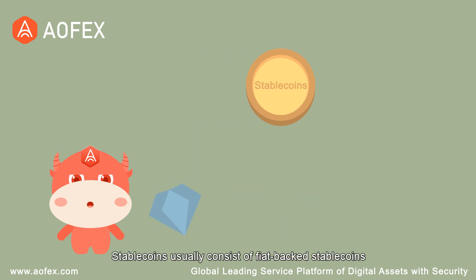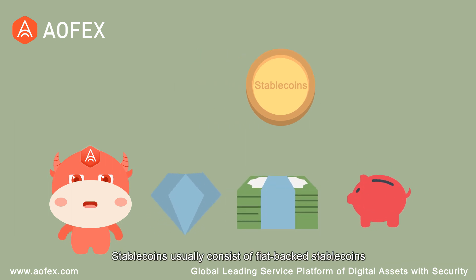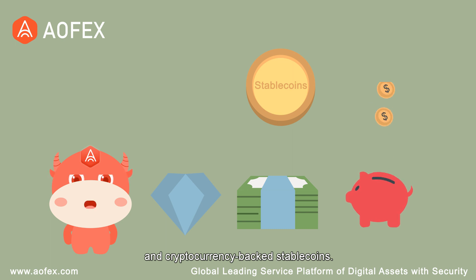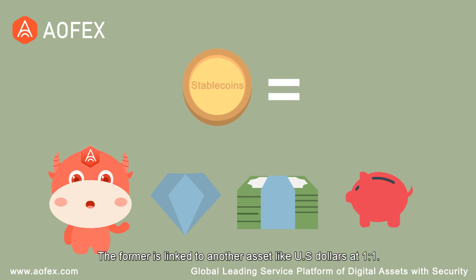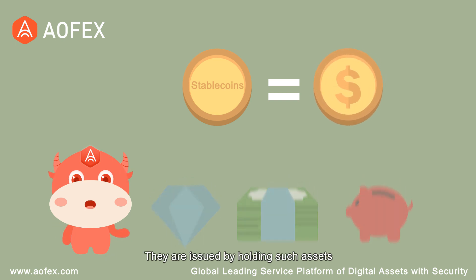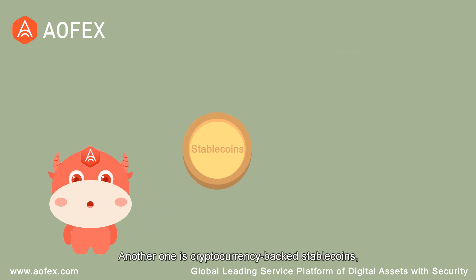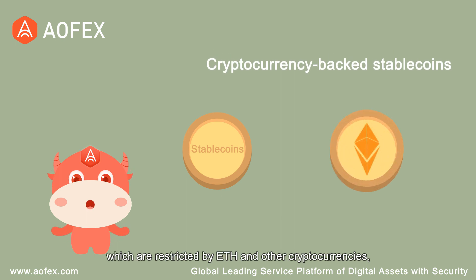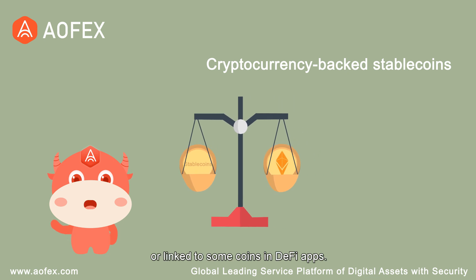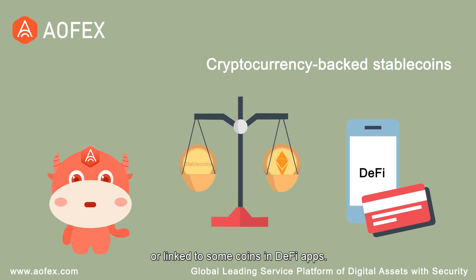Stablecoins usually consist of fiat-backed stablecoins and cryptocurrency-backed stablecoins. The former is linked to another asset like US dollars at one-to-one, and they are issued by holding such assets or providing the assets with similar security. Another type is cryptocurrency-backed stablecoins, which are restricted by ETH and other cryptocurrencies, or linked to some coins in DeFi apps.